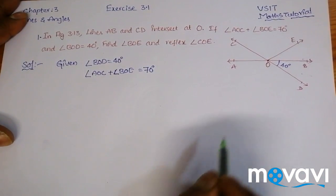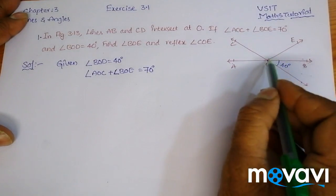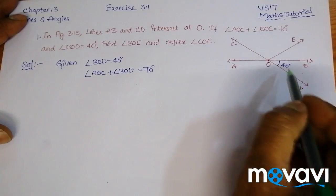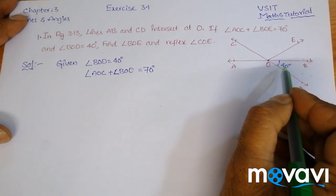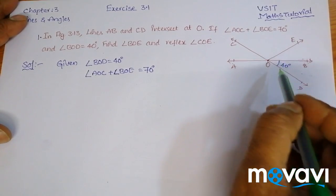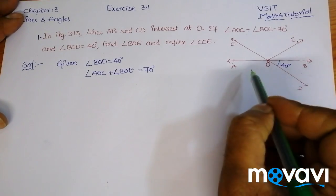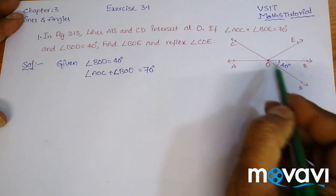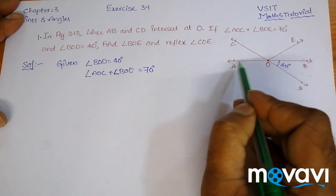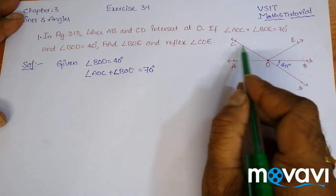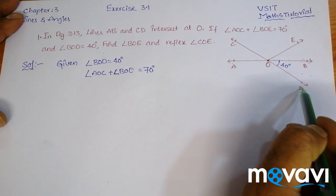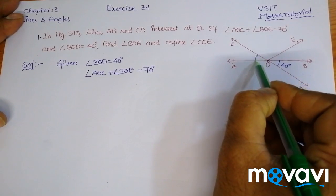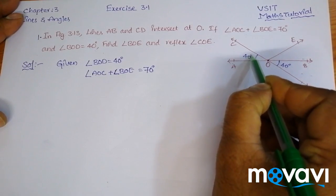Now, AOC and BOD are vertically opposite angles, and we know that vertically opposite angles are equal when two lines intersect at some point. In our picture, AB and CD intersect at point O, so AOC is vertically opposite to BOD and they are equal. So if BOD is 40 degrees, then AOC is also 40 degrees.